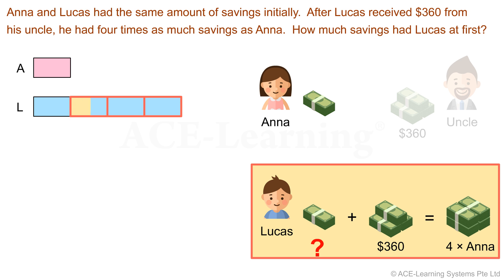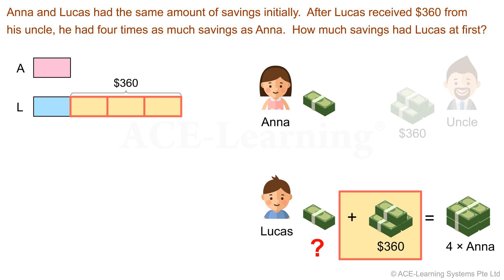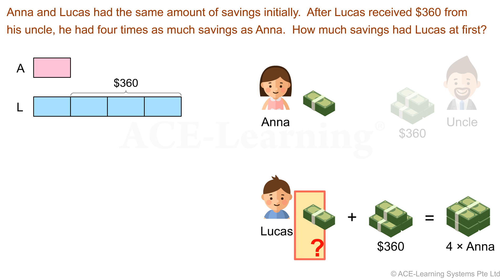Note that this also shows that Lucas's savings is three units more than Anna's. Now the amount received was $360. Where should we indicate $360? We had added the three equal units, so we use a curly bracket to indicate that three equal units represent $360. We are to find the amount of savings Lucas had at first, so we indicate the quantity to find with a question mark.